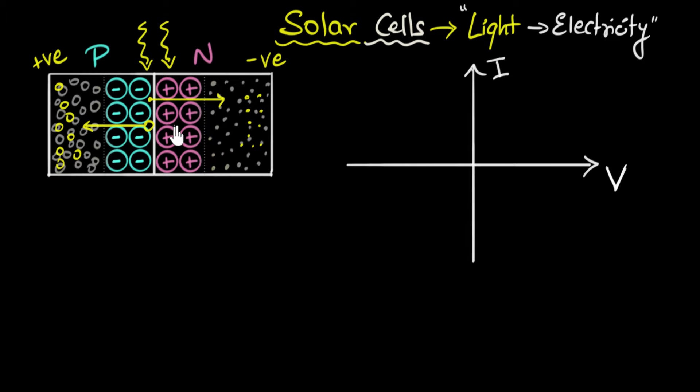We know that as we shine light, more and more electron-hole pairs are formed and they keep accumulating, so the voltage keeps increasing. But the question is: if I don't attach anything and I keep shining light, would the voltage keep increasing forever? I want you to pause and think about what's going to happen eventually.